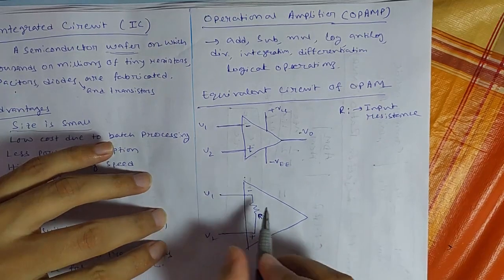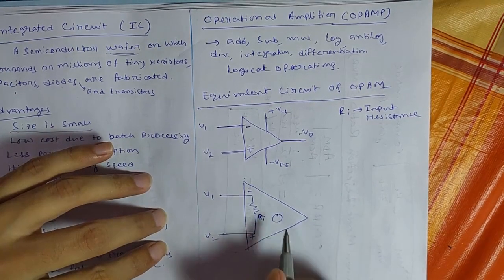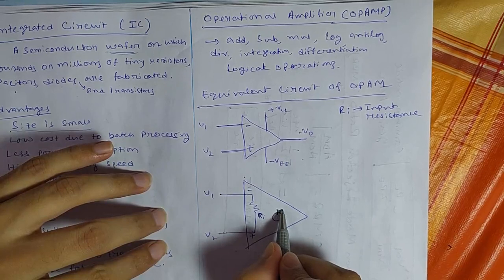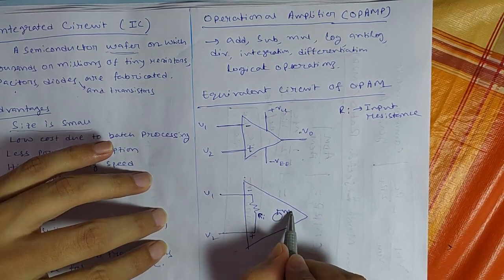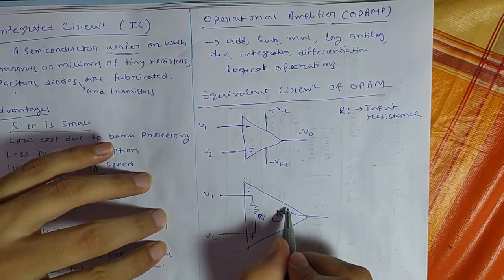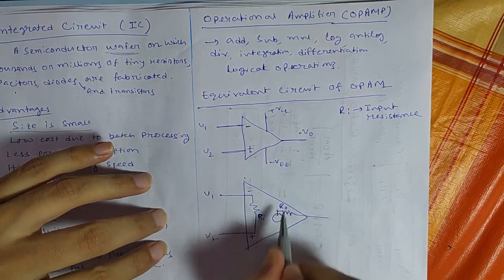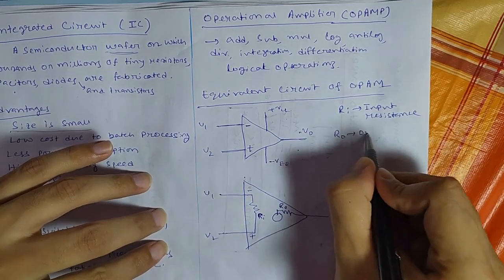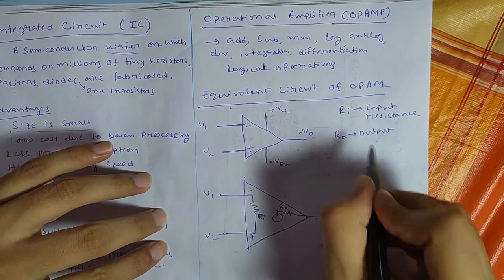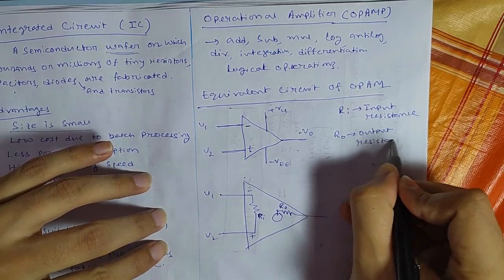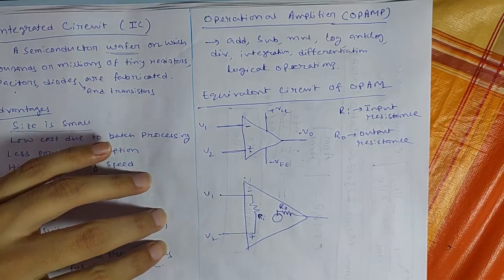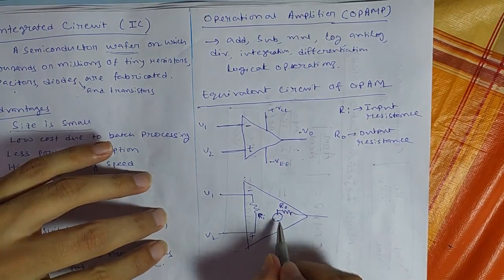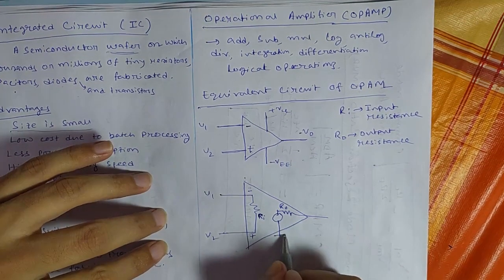Now you have a dependent source and you have resistance. This resistance is known as R0. R0 is output resistance. And this is internally grounded.